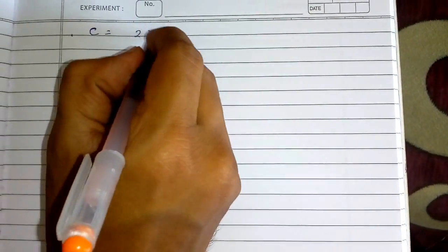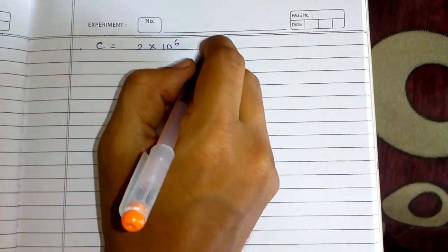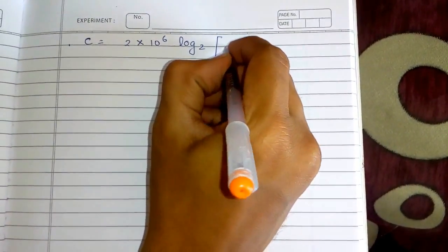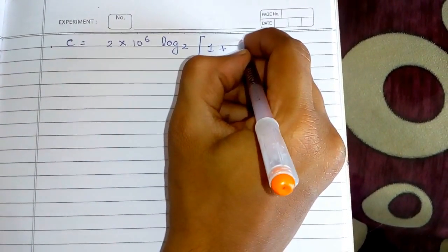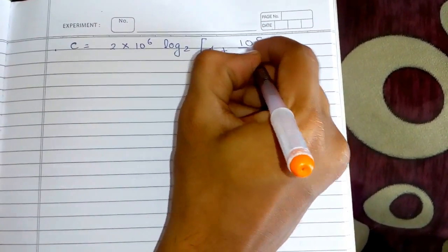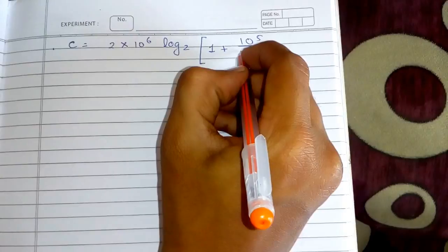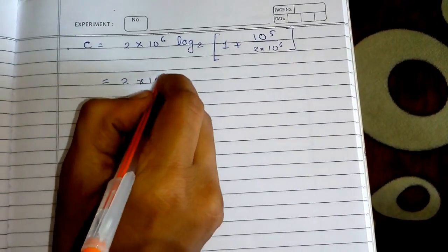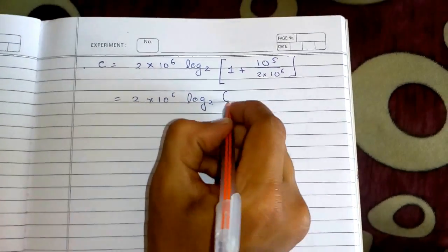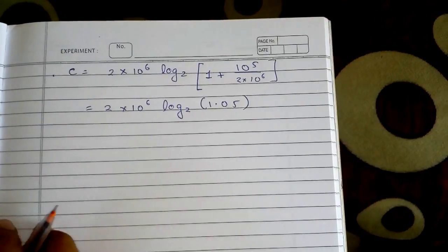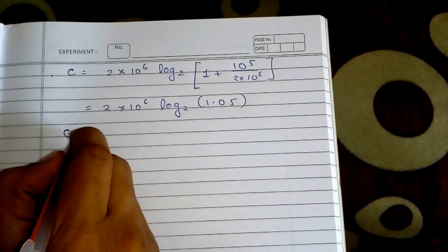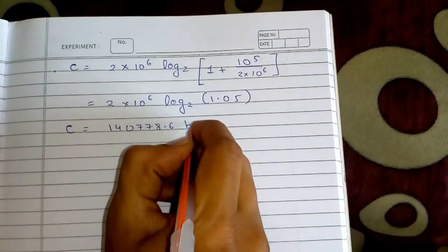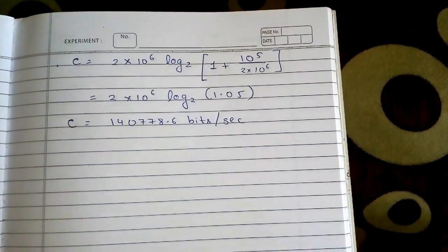Bandwidth equals 2 megahertz, which is 2 × 10⁶. So C = 2 × 10⁶ × log base 2 of (1 + 10⁵ / (2 × 10⁶)). Solving this gives 2 × 10⁶ × log base 2 of 1.05. On solving further, I get C = 140,778.6 bits per second. This is my channel capacity.